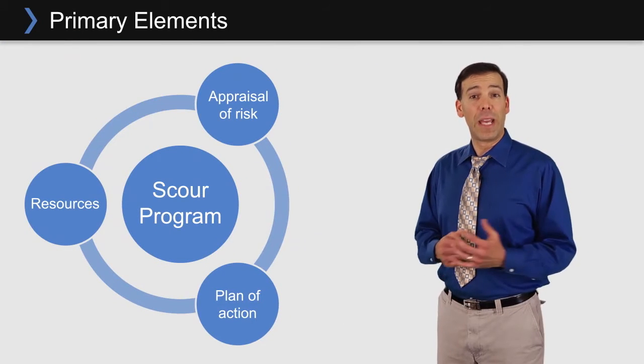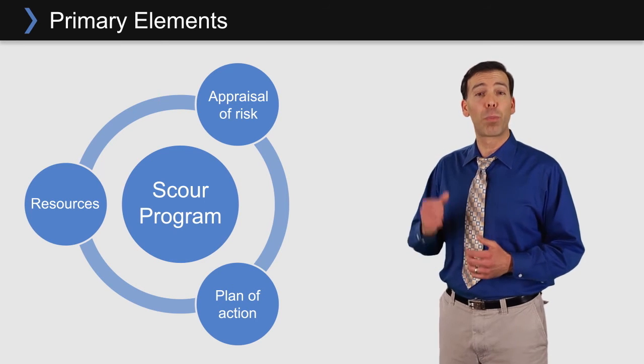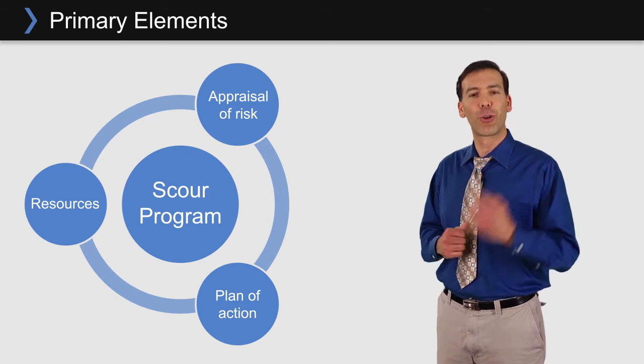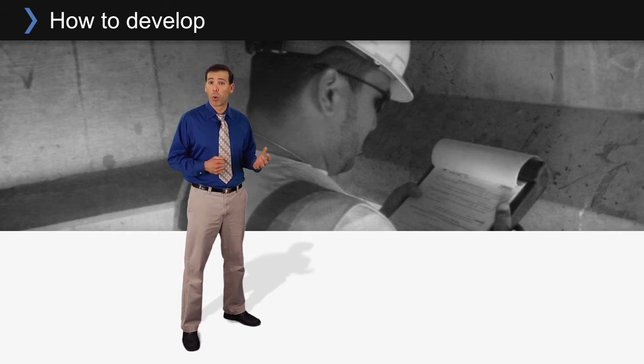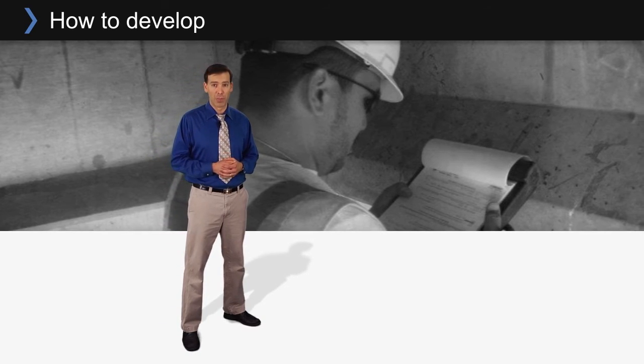Let's see how a LPA develops its risk assessment and scour plan of action for one scour critical bridge. A county bridge inspector reports that the footing of a bridge has been undermined, making the bridge scour critical.